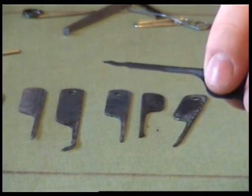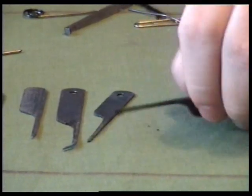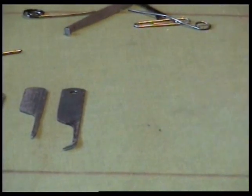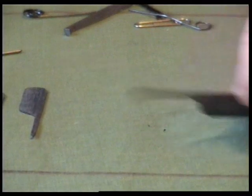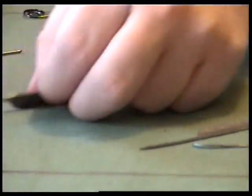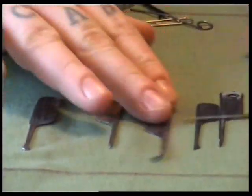So then you can see the ends there and they've all got different ends on them. And if when you make them you're not sure what to put on the ends, just look on Google for images of lockpicks and then just copy those. So that's the picks.